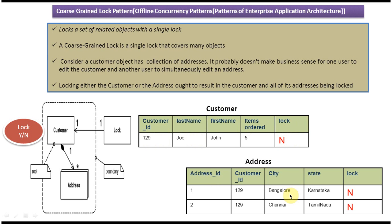The second table is address. A customer has many addresses, so it is a one-to-many relationship. The address table has five columns: address ID, customer ID, city, state, and lock. The customer ID is the primary key in the customer table and acts as a foreign key in the address table. Customer 129 has two addresses — one in Bangalore and one in Chennai. The lock column is initially N.